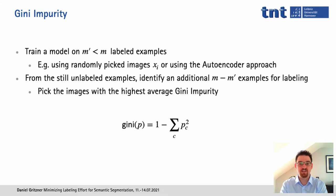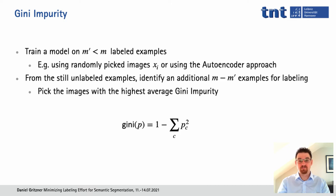Another approach we used is based on the Gini impurity. In this approach, we supposed we already had a model trained on m' labeled examples, where m' is smaller than the actual desired number m. For example, we could create this model by simply picking random images or using the previous approach to identify m' examples. Using this model, we then made predictions for all our still-unlabeled input images. The prediction gives us a discrete probability distribution p for each pixel, which tells us how likely it is that a given pixel belongs to a certain class.